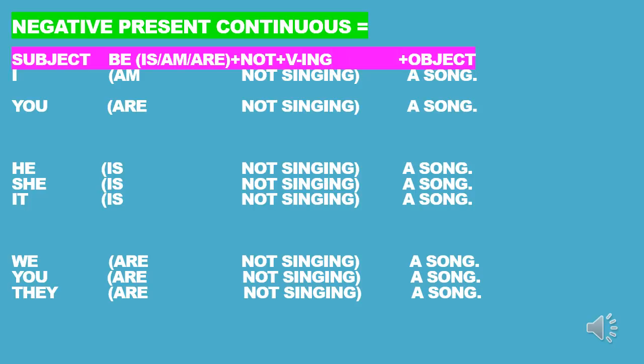I am not singing a song. You are not singing a song. He is not singing a song. She is not singing a song. It is not singing a song. We are not singing a song. You are not singing a song. They are not singing a song.